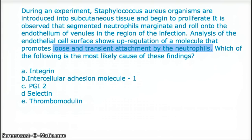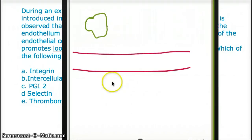Keep this sentence in mind. Which of the following is the most likely cause of these findings? Obviously they are talking about how neutrophils come near the blood vessels and do the whole margination and rolling — that's the concept we are talking about. So let's do a quick review of that topic.